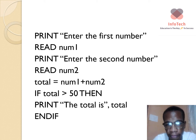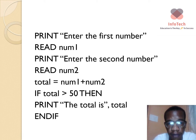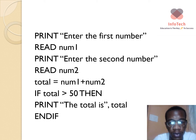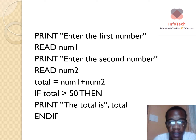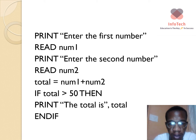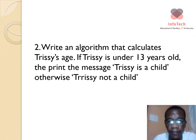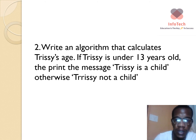For example, if you had 30 in number one and 35 in number two, added together you would have a total of 65. Since 65 is greater than 50, it would print. If the value in total is less than 50, the program would simply terminate. Also remember, when you open an if statement you must close it with end if, and then end the pseudo code.